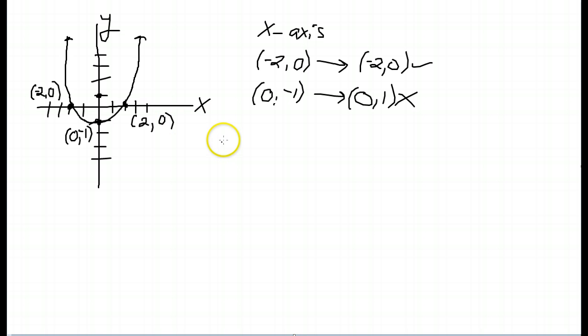Now, we'll test symmetry with respect to the y-axis. We'll take each of our points and change the x-coordinate. Starting with negative 2, 0. When I change the x-coordinate, I have 2, 0. And that point, 2, 0, is on the line, is on the graph.